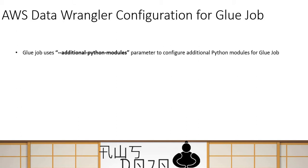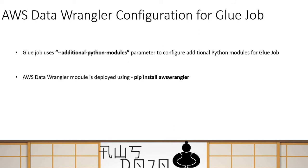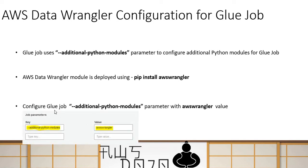How do I configure Data Wrangler for a Glue job? It's very simple and straightforward. Glue job has a capability to be configured for additional Python modules. If you want to configure any additional Python module, you provide a reserved parameter called 'additional Python modules' to the Glue job, and then provide the name of the module. That module will be made available to the Glue job. In this case, you provide 'awswrangler' as the value.